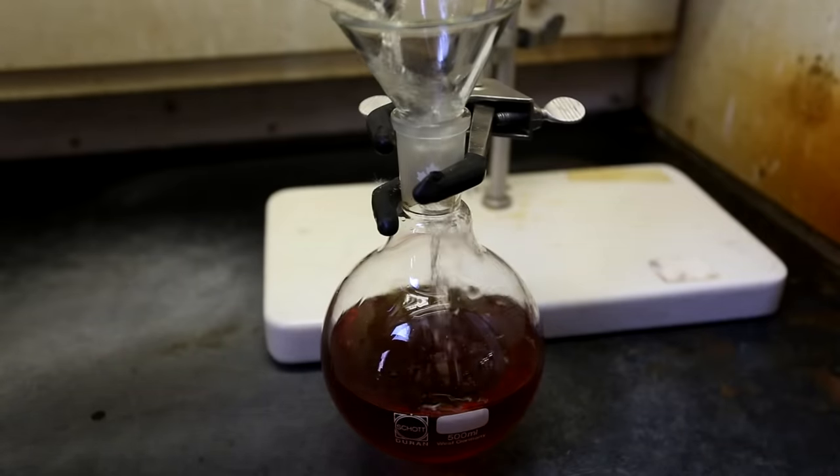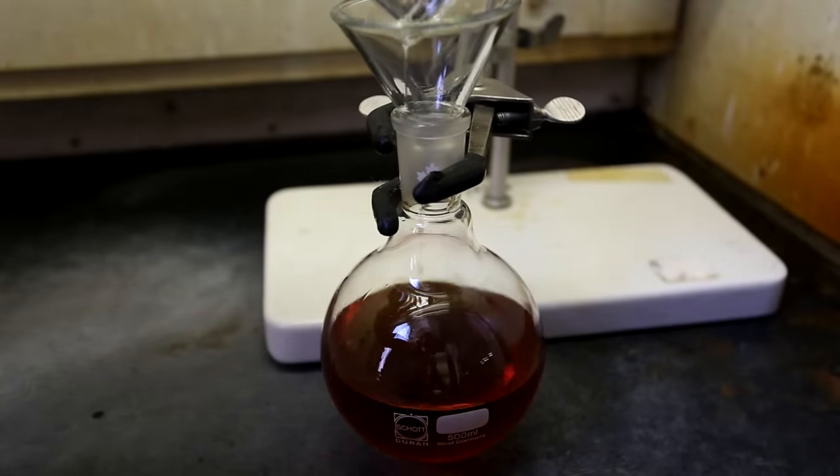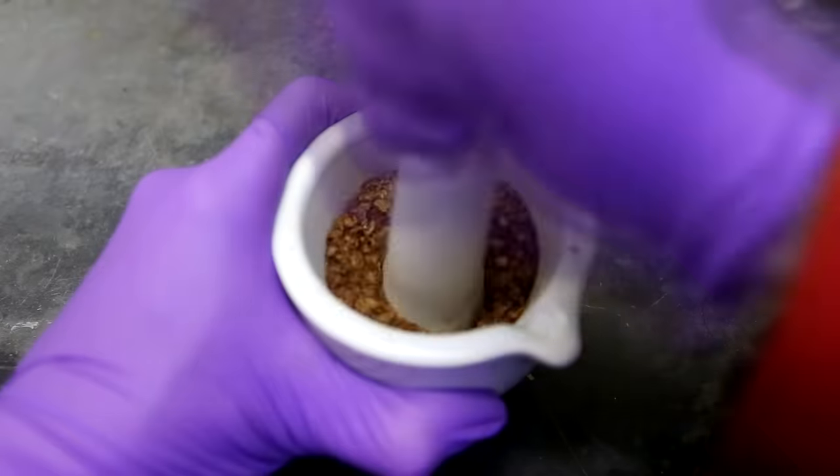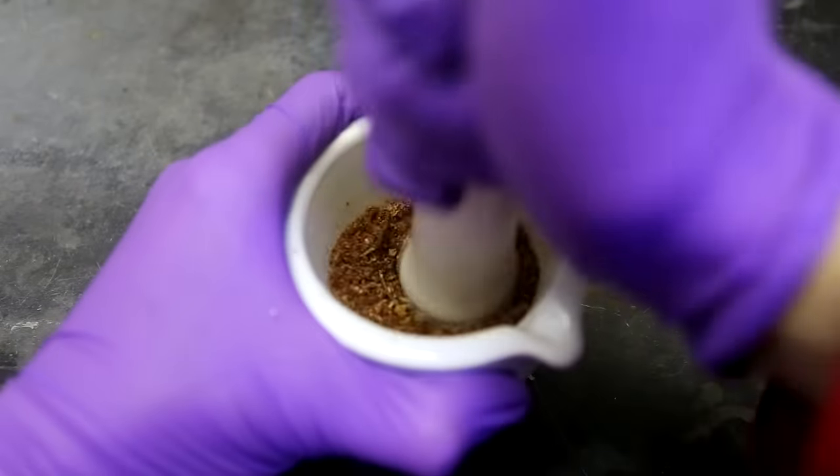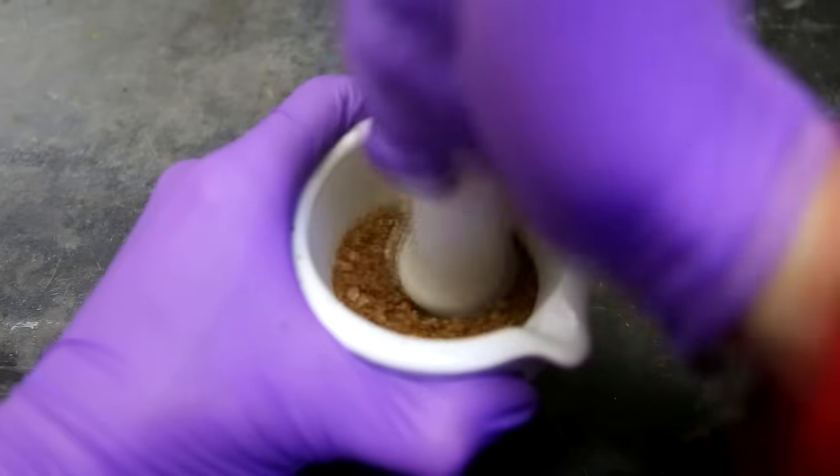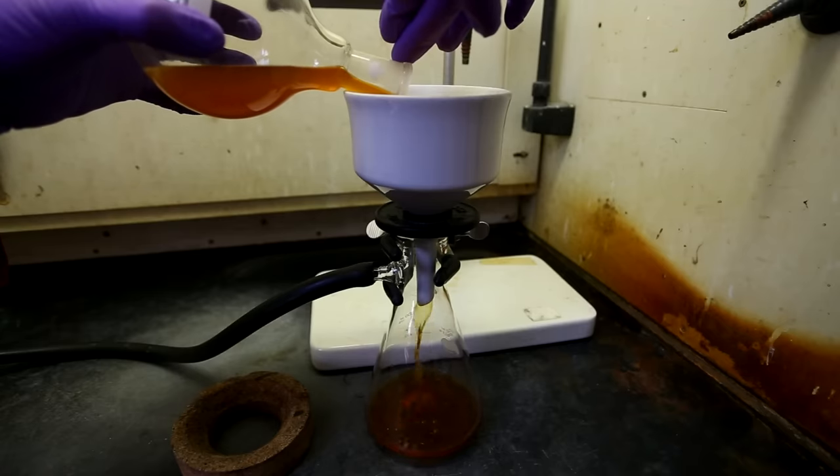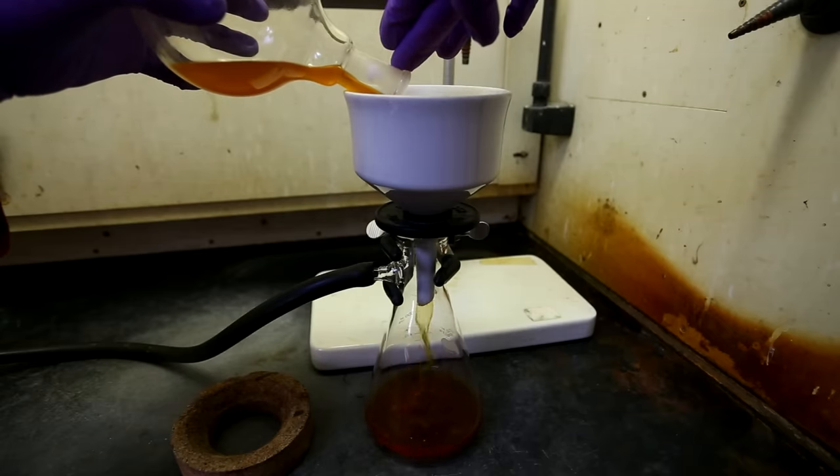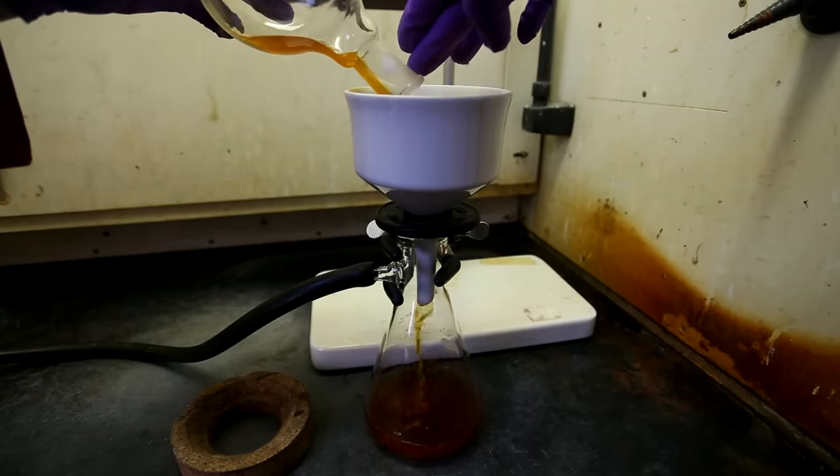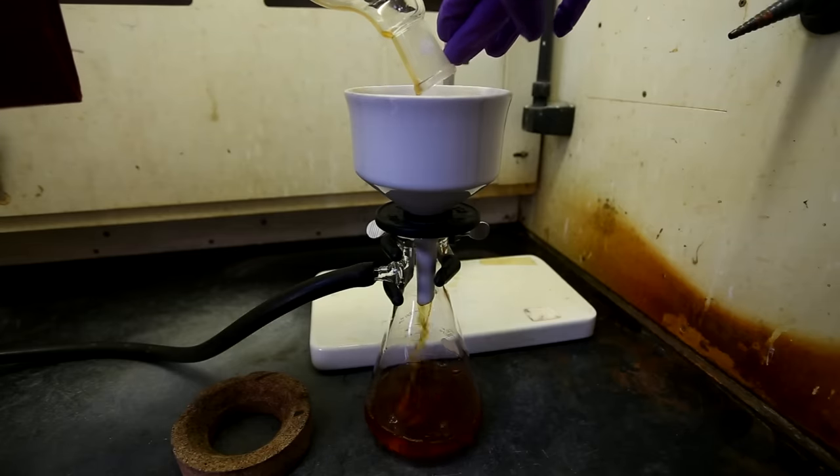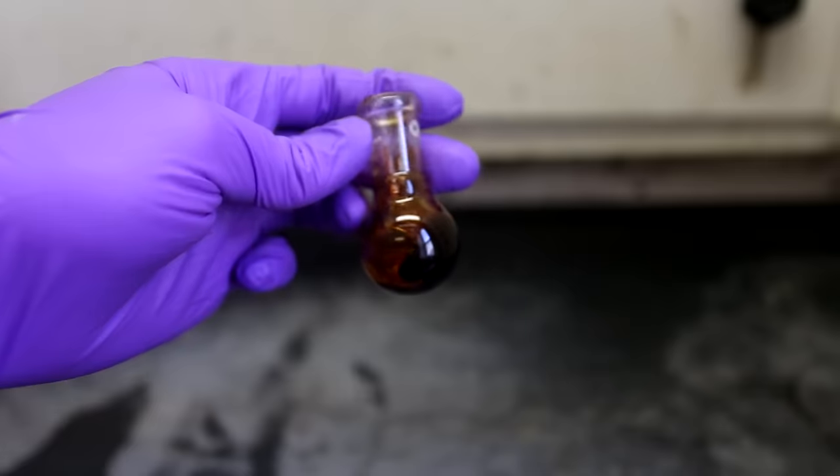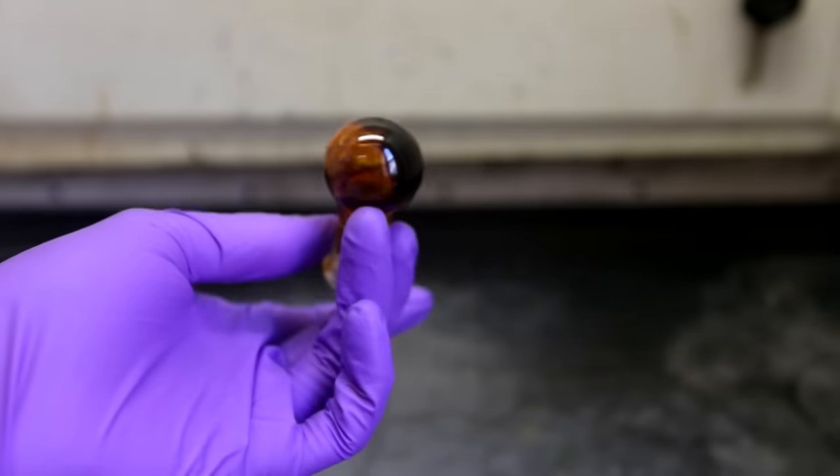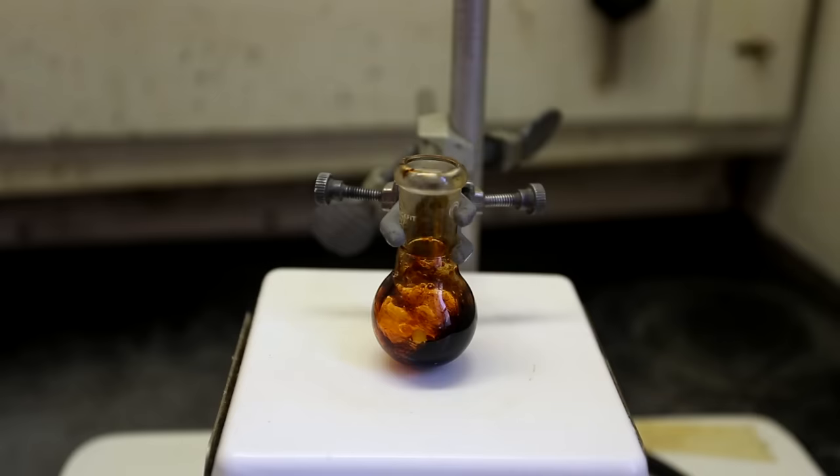Capsaicinoids are the chemicals in chili peppers that give them their spiciness. The major and most potent capsaicinoid in chili peppers is called capsaicin. Capsaicinoids trigger a burning feeling by stimulating neurons that normally detect heat. The most common use of capsaicinoids is to make food spicy. However, capsaicin does have some other uses such as its use in pepper spray or as a pain reliever.